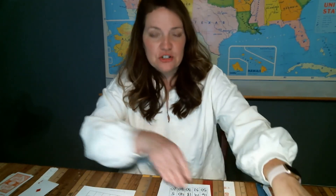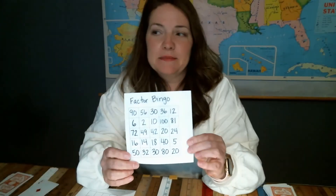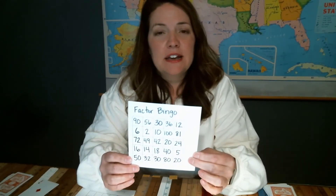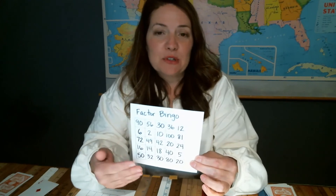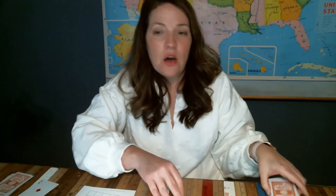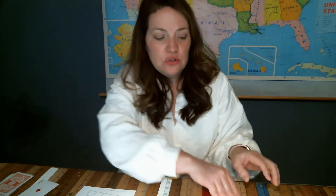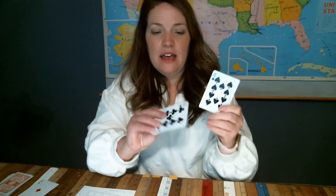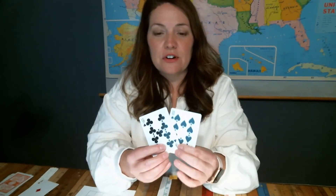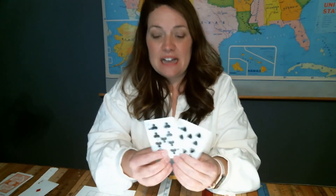Each player should create their own unique bingo card with different numbers. After you've made your card, it's time to play. To play, player 1 will draw 2 cards from the deck. So I've got a 10 and I've got a 9. Multiply those 2 factors together — 10 times 9 is 90.